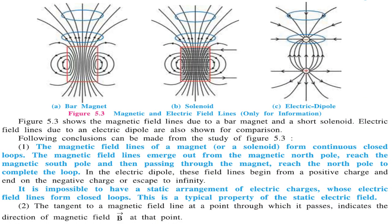This figure shows magnetic field lines due to the bar magnet and the short solenoid. Electric field lines due to an electric dipole are also shown here for comparison, because both lines have different ways of formation, and from this certain conclusions can be made.